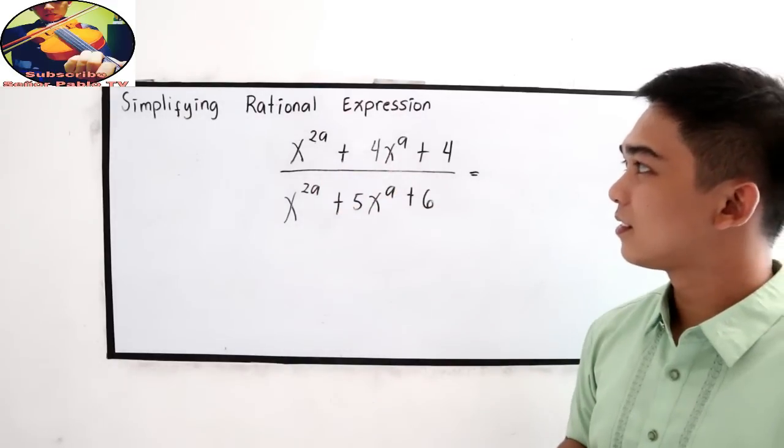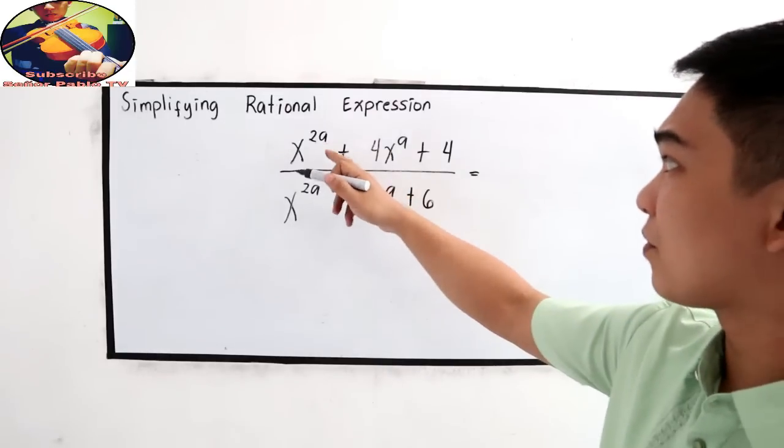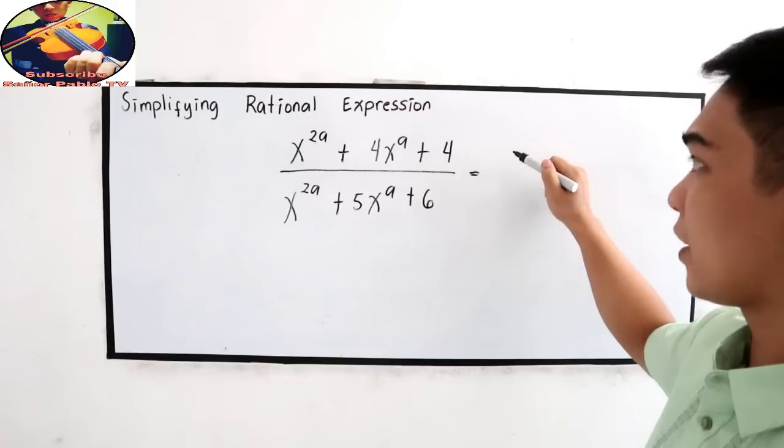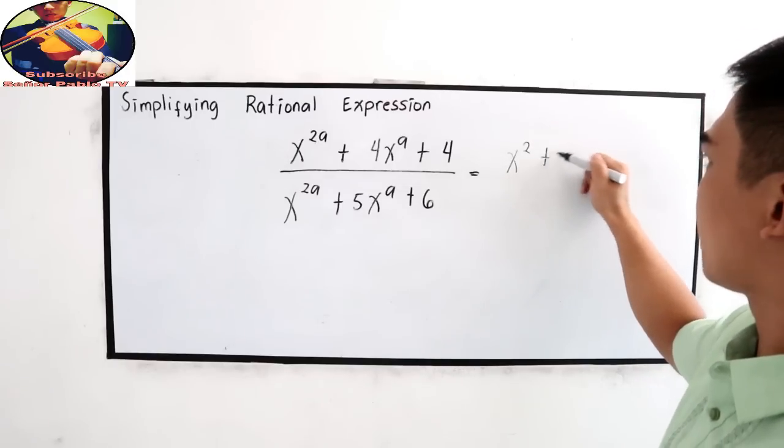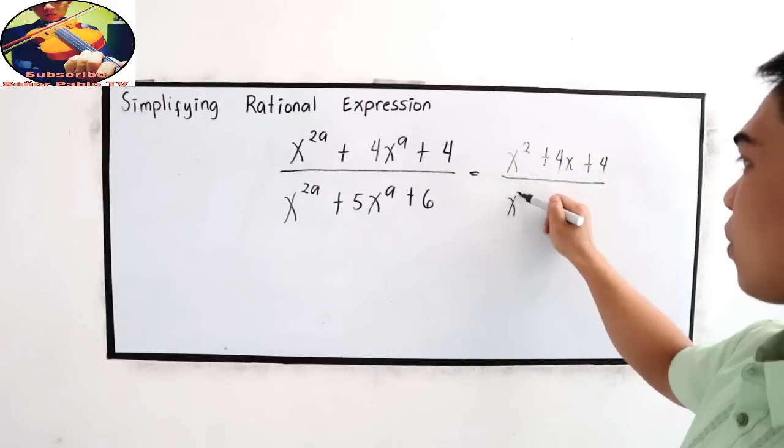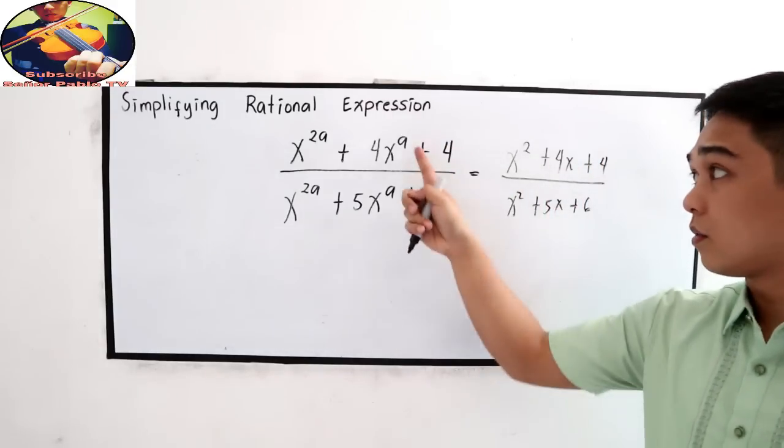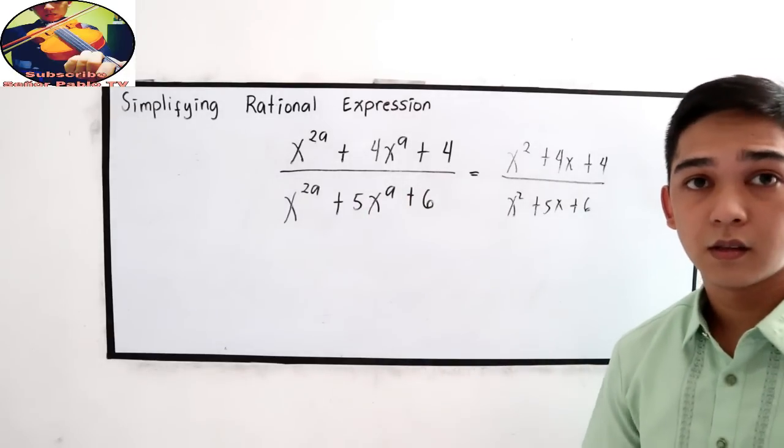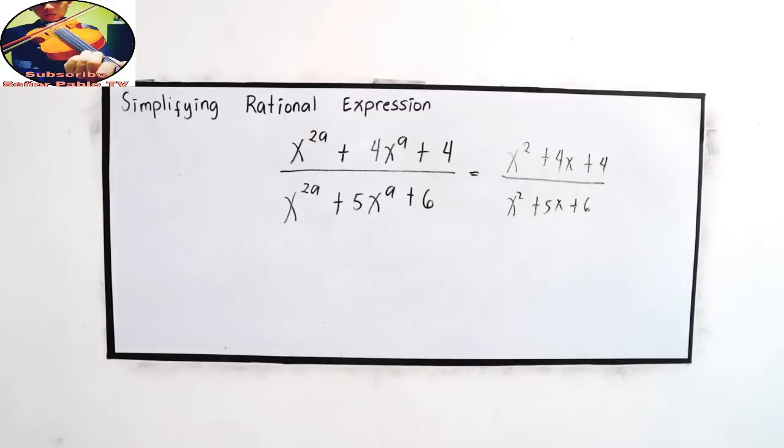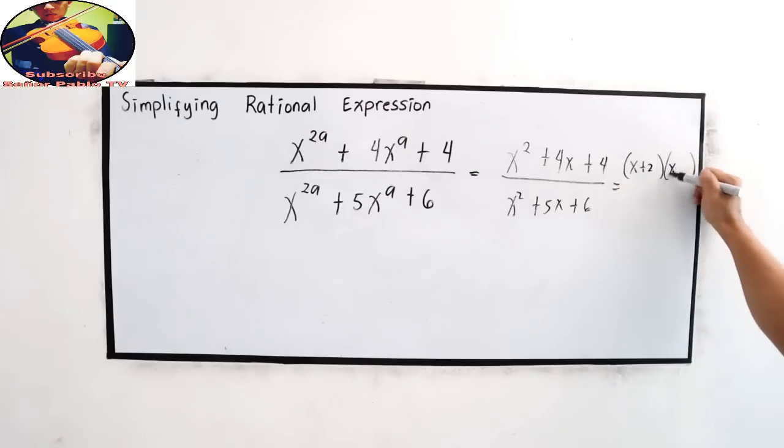Look at our exponent. This is just the same. If we remove a, don't be afraid of that exponent. That is equivalent to x squared plus 4x plus 4 all over x squared plus 5x plus 6. They are similar. They just put a on the exponent. Since there is a we can factor this as perfect square trinomial.